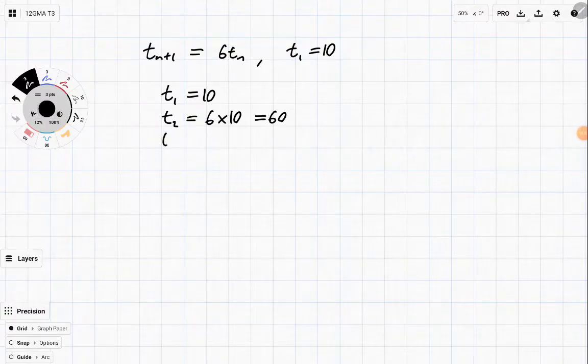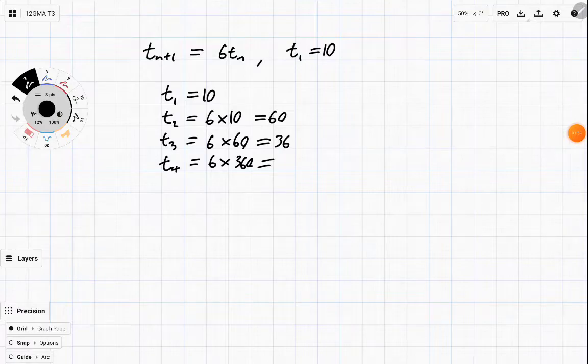The third term is going to be 60 times, oh sorry, 6 times 60, which is 360. And the fourth term, you might need a calculator for this, 6 times 360 is equal to 2160.